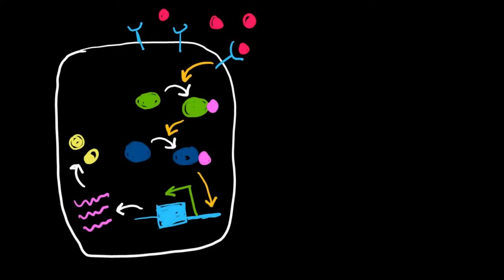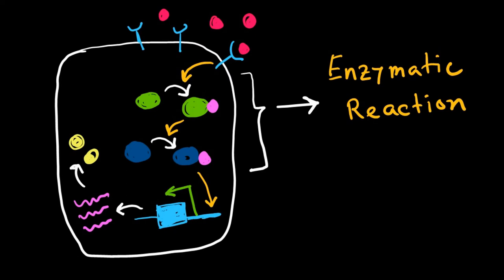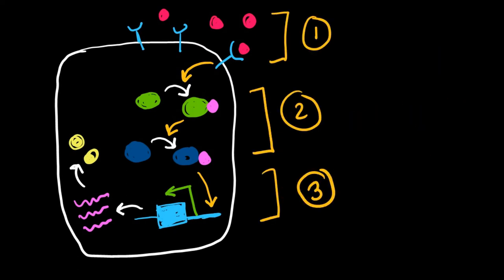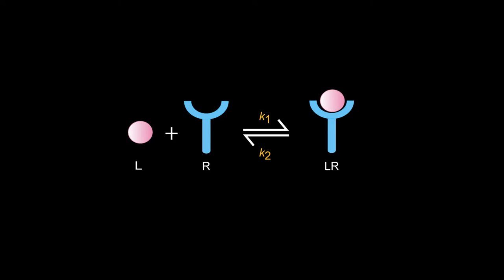Cell signaling starts with a ligand binding to its receptor on the cell surface, which triggers a cascade of enzymatic reactions. Eventually the signal reaches the nucleus and triggers the expression of target genes. We can break this whole process into a few elementary processes: interaction of the ligand with the receptor, enzymatic reaction, and transcription and translation. We will model each of these elementary processes one by one. A ligand binds to its receptor to form a complex.